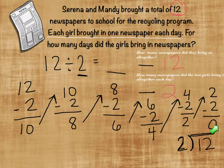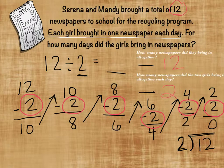Now, what do we need to do? We started with 12 and subtracted 2 all the way until we got to 0. We need to know how many times we subtracted 2. Let's count: 1, 2, 3, 4, 5, 6. We subtracted 2 six times. So how many days did the girls bring in newspapers? They brought in newspapers for 6 days.